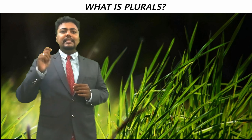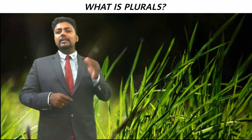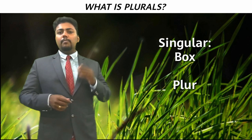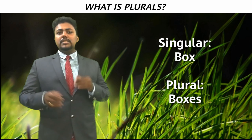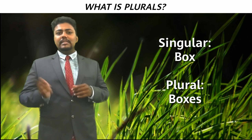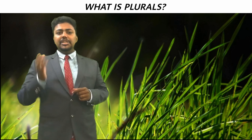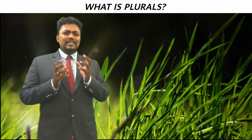For nouns that end with s, x, z, ch, and sh, add 'es' at the end of the word. Singular and plural examples: boss becomes bosses, box becomes boxes, dish becomes dishes.